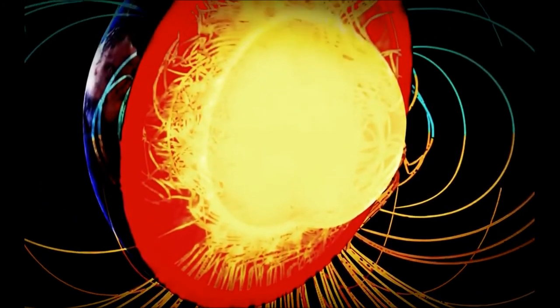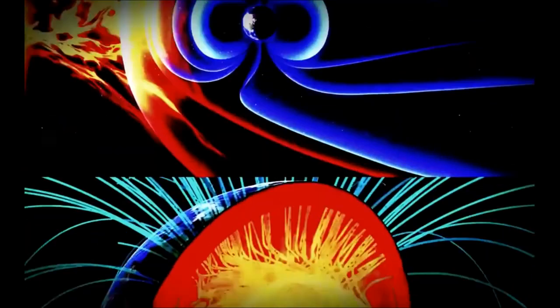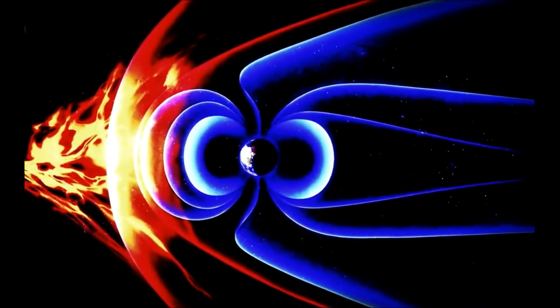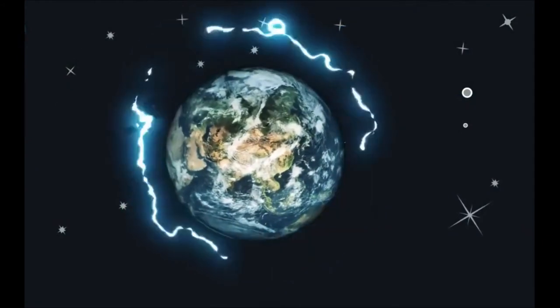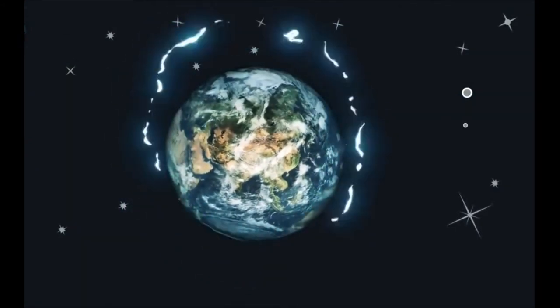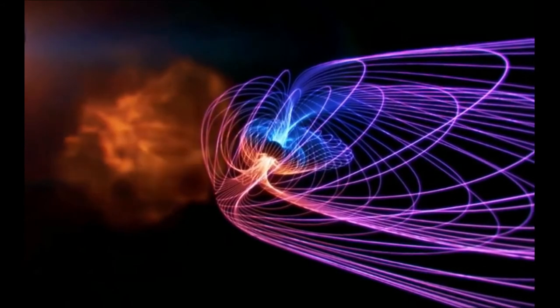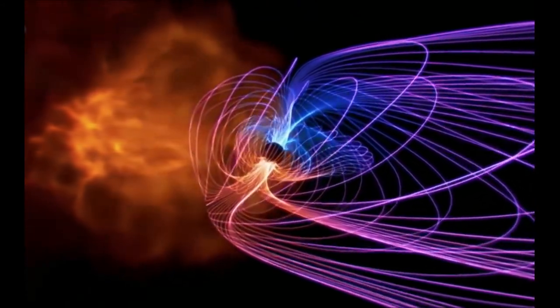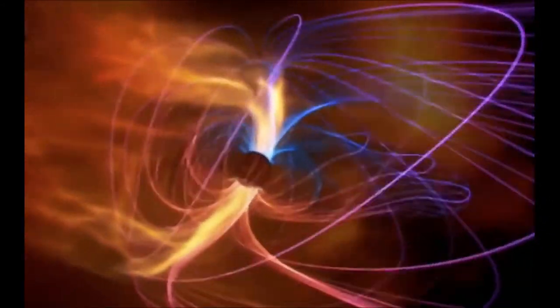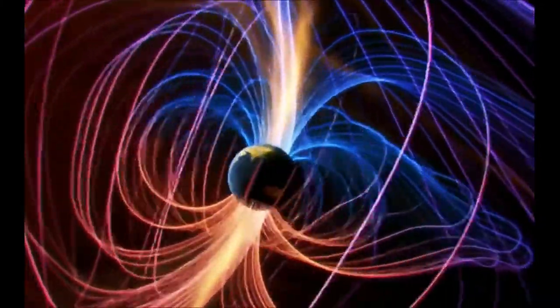The next thing that would likely happen is that the magnetic field of the Earth would stop regenerating and slowly decay over time. The reason for this is because the magnetic field of the Earth is generated by a dynamo effect that involves its rotation. Our magnetic field plays a huge role in keeping our atmosphere intact, and this magnetic field also protects the Earth from cosmic rays.